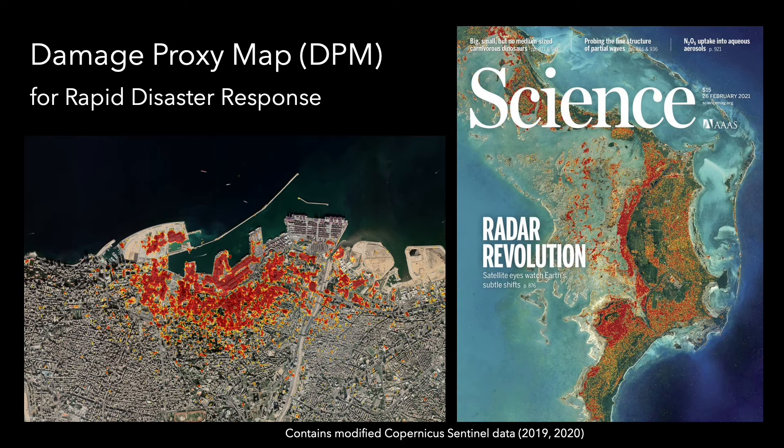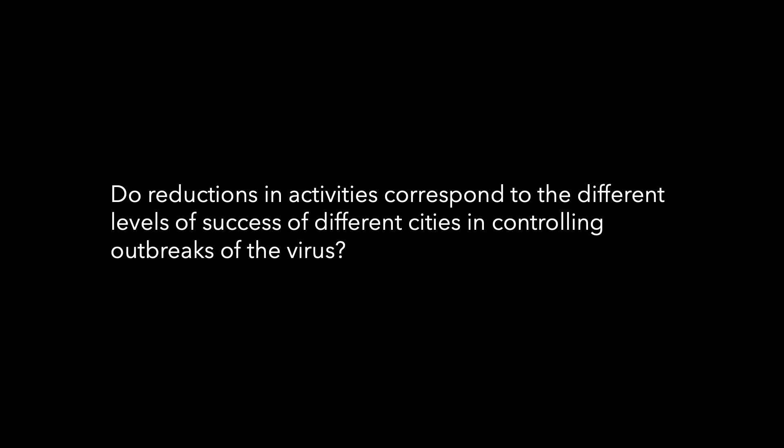For the past 12 years, we have supported over 100 major disaster response efforts and humanitarian assistance around the world. Then came the COVID-19 pandemic. We shifted our gears and started producing maps of major cities around the world, targeting to detect changes — not by natural disasters, but by human activities.